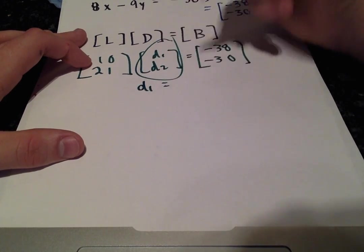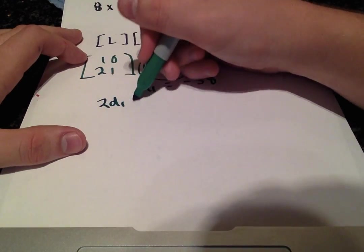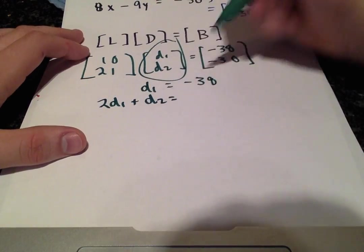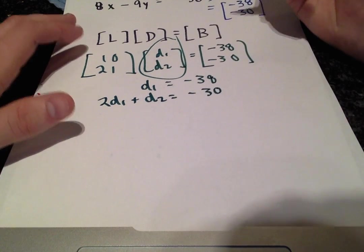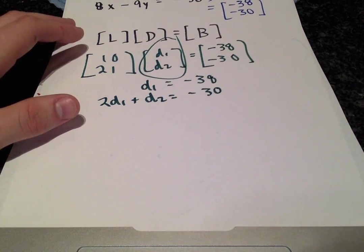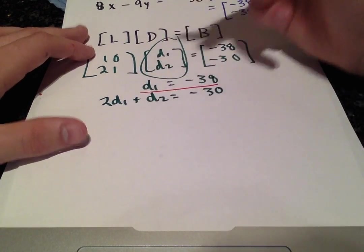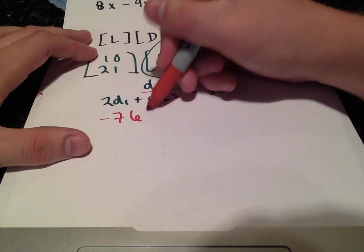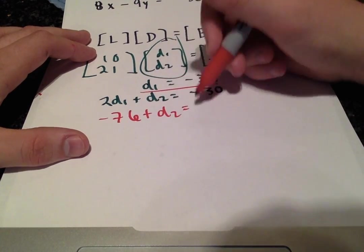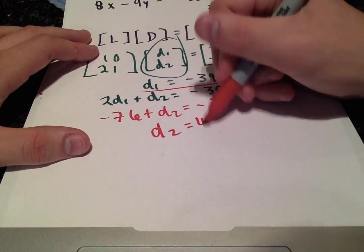Multiplying it out, we get D1 is equal to negative 38, and 2D1 plus D2 is equal to negative 30. Right away, we see our D1 value is negative 38. You plug that in here and get negative 76 plus D2 is equal to negative 30. Solving for D2, we get 46.